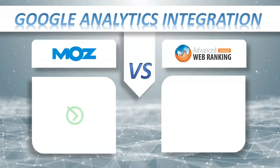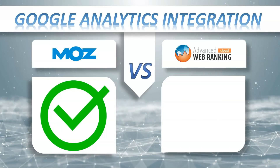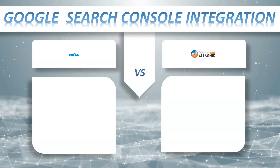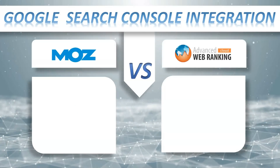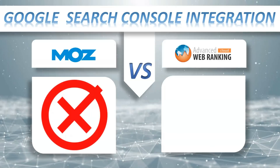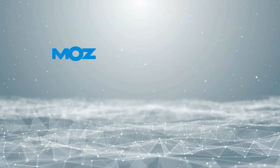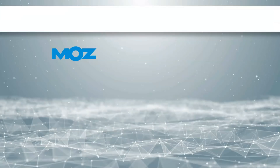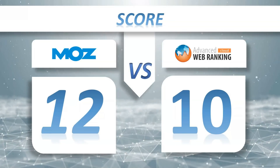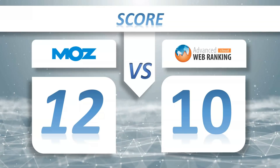Google Analytics Integration: MostPro plus, AWR Cloud plus. Google Search Console Integration: MostPro doesn't have it, AWR Cloud has it. So the score for now is MostPro 12, AWR Cloud 10.